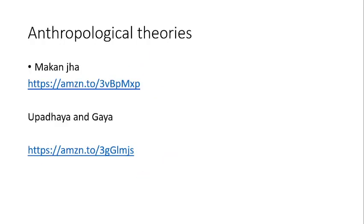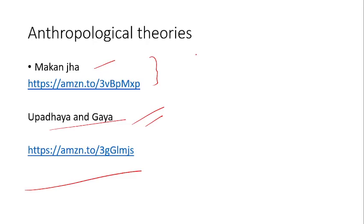Coming to theory, by Upadhyayan Gaya Pande — this book is more preferable. You can take Makhanja, but in my attempt I felt it was not sufficient enough, so I shifted to Upadhyayan Gaya, और इससे मेरा social anthropology का भी बहुत सारा part cover हो गया. So prefer Upadhyayan Gaya — this is the best book for anthropological theory. Makhanja is well and fine, but I will still suggest Upadhyayan Gaya.